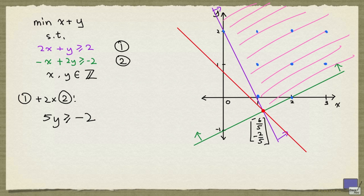So, any solution that satisfies these constraints must also satisfy this inequality. Multiplying both sides by 1 fifth, we get y greater than or equal to negative 2 over 5.